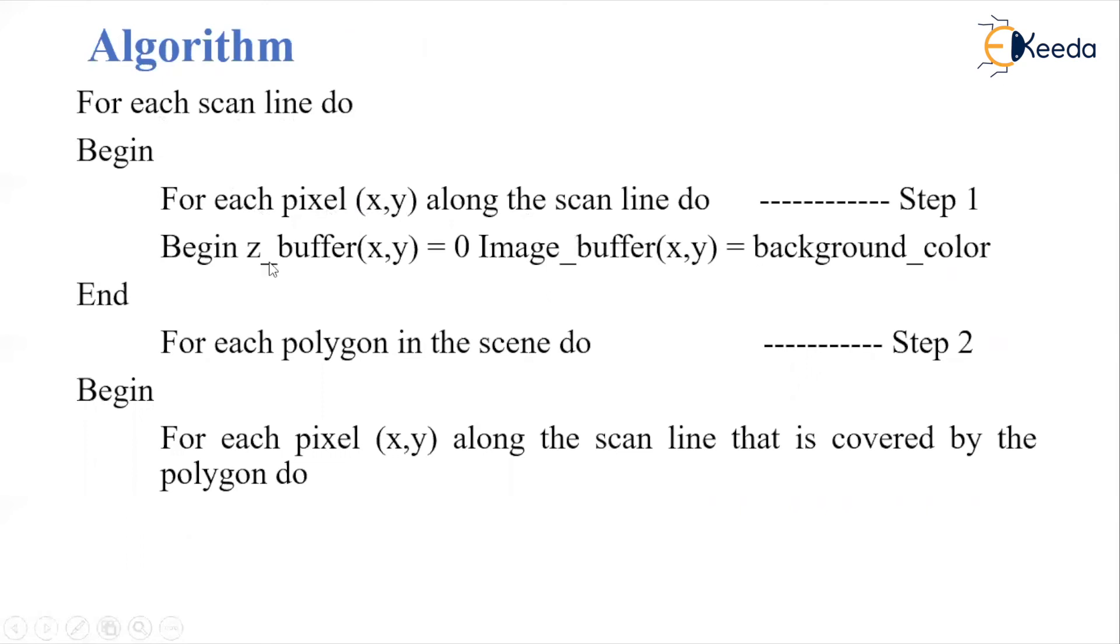We begin with the z-buffer, which is initially set to zero, meaning the depth value is initially zero. The image buffer is set to the background color.